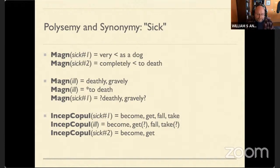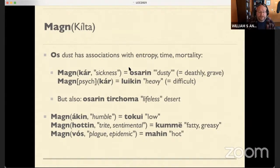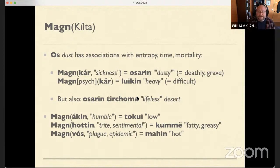This is worth considering when you come up with collocations — think about what meaning you're collocating with. Using my own language, Kielta, as an example: I was thinking about sickness, so I had to think about how to express 'deathly' or 'grave' sickness. The word 'os' already had associations with entropy and mortality in the language, so 'os' plus 'sick' means deathly sick. And I already had 'luikin,' meaning heavy, as a psychological intensifier meaning you're experiencing a difficult sickness.